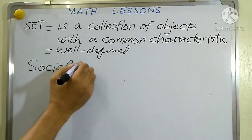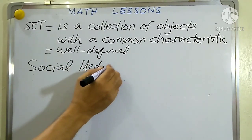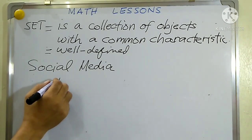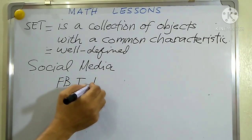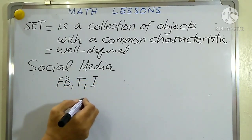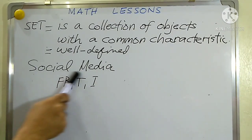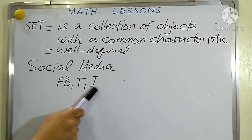The examples are Facebook, Twitter, and Instagram. Now these platforms have a common characteristic, and what is their common characteristic? Social media. Therefore, this group is called a set.